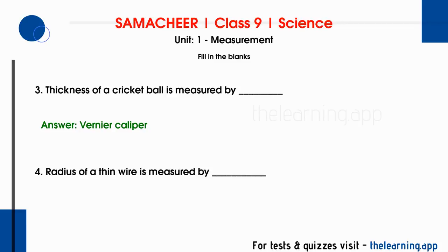Fourth question: radius of a thin wire is measured by — correct answer is screw gauge. Since a thin wire is very small, we need a precise instrument. The instrument used is called a screw gauge.